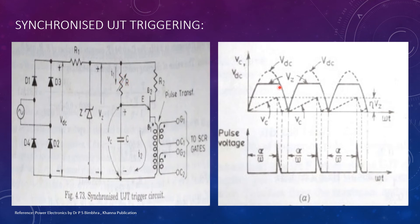As the Zener diode voltage VZ goes to zero at the end of each half cycle, synchronization of the trigger circuit with the supply voltage across the SCRs is achieved. As shown here, as the capacitor tries to charge again, the capacitor voltage synchronizes with the supply voltage.